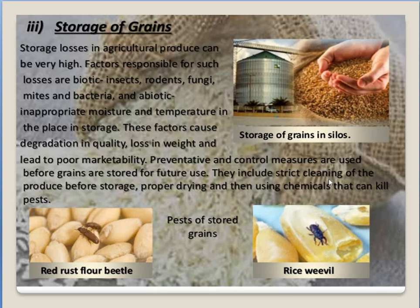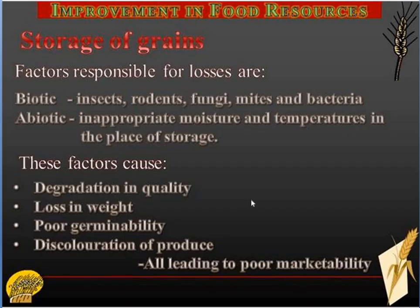In order to prevent these problems, the farmer can adopt certain preventive and control measures. In general, he needs to clean the produce properly before storing, dry the seeds, and may use certain chemicals so that insects and pests are kept away from the storage area — these chemicals act as repellents.